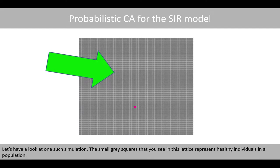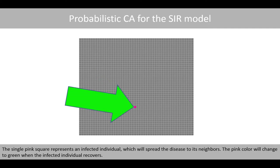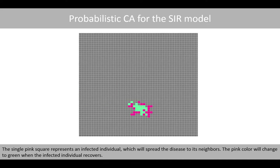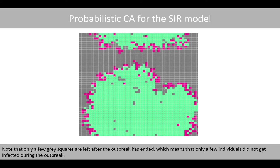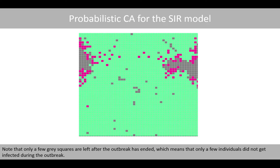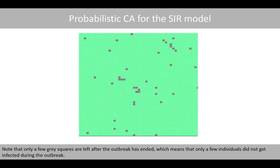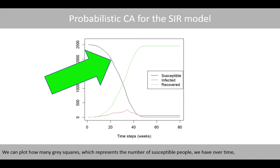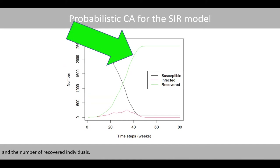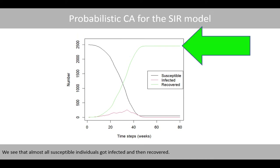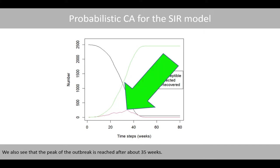Let's have a look at one such simulation. The small gray squares represent healthy individuals in the population. The single pink square represents an infected individual which will spread the disease to its neighbors. The pink color will change to green when the infected individual recovers. Note that only a few gray squares are left after the outbreak has ended, meaning only a few individuals did not get infected. We can plot the number of susceptible, infected, and recovered individuals over time. We see that almost all susceptible individuals got infected and then recovered, and that the peak of the outbreak is reached after about 35 weeks.